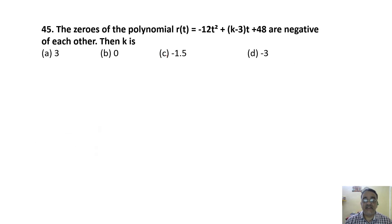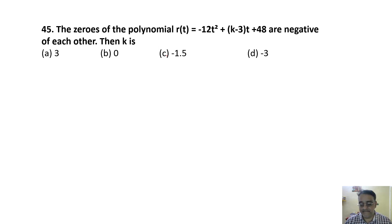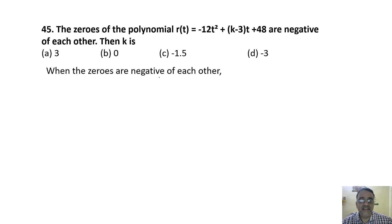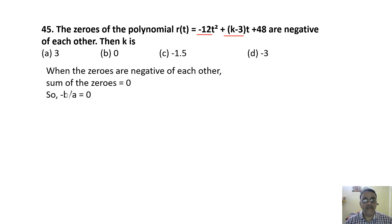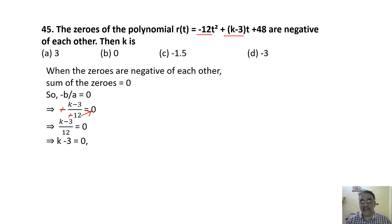Question 45: Zeros of r(t) = −12t² + (k−3)t + 48 are negatives of each other. When zeros are negatives of each other, their sum = 0. Sum of zeros = −b/a = −(k−3)/(−12) = 0, so k−3 = 0, giving k = 3. The correct answer is option A.